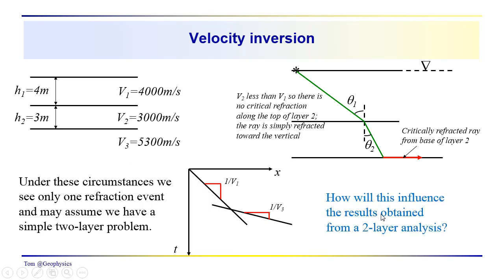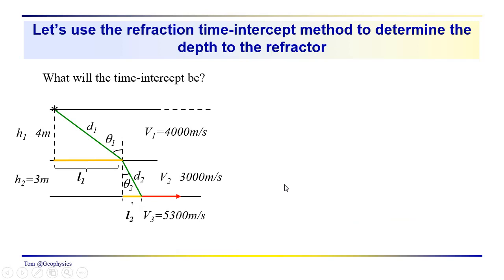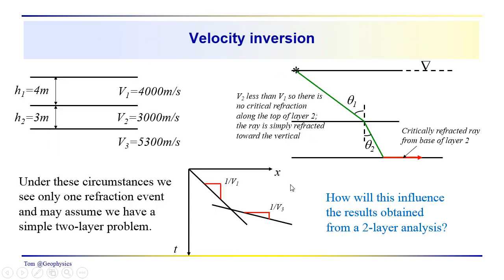So this would be the data then that you would be analyzing and you come up with an incorrect answer for the depth to this refractor. Since you don't know that this lower velocity layer is actually sandwiched in there. So the question is, how will that affect your result in the end? If we pursue a typical two-layer analysis. And so an approach that we might take would be to use the time intercept. We assume that we can see the critical refraction. We follow that over, we get the intercept.